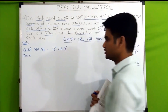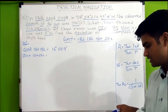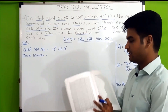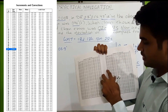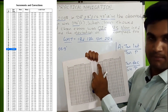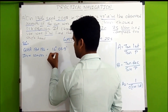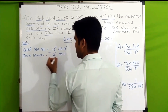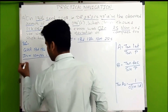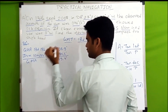For the increment, we go to the increments and corrections pages of the nautical almanac, find the page for 10 minutes, and look up 22 seconds in the sun and planets column. The increment for 10m 22s is 2° 35.5'. Adding this to the GHA from the daily pages gives us a corrected GHA of 18° 39.4'.